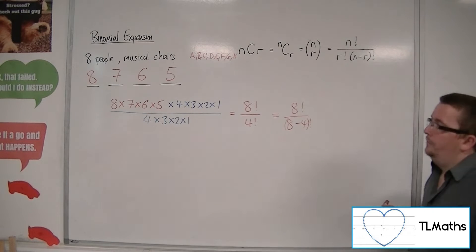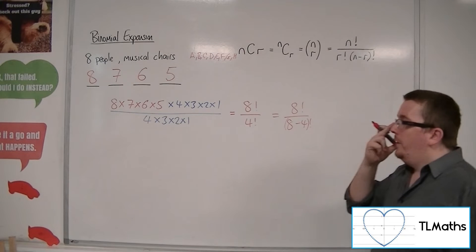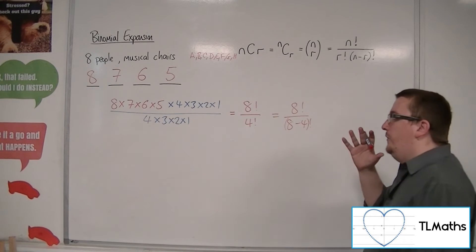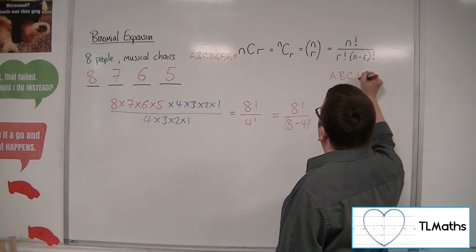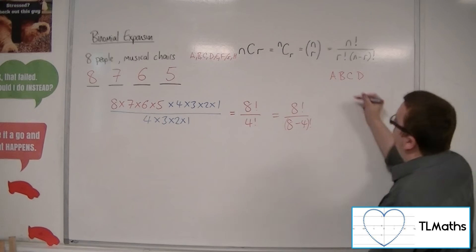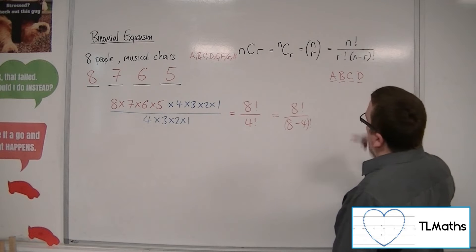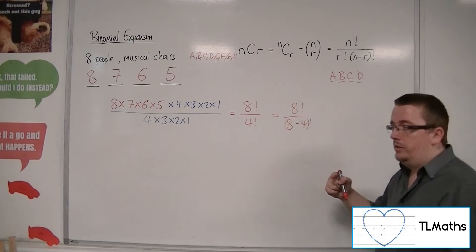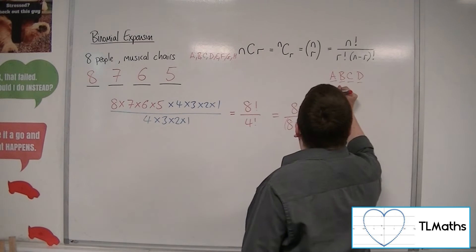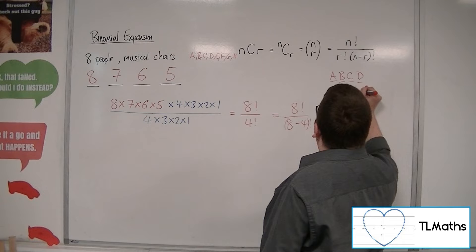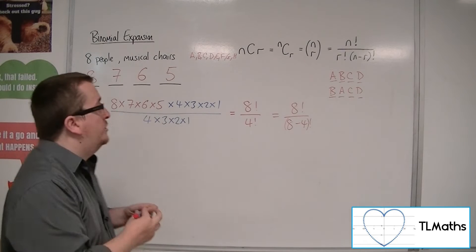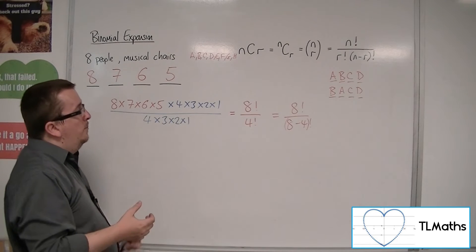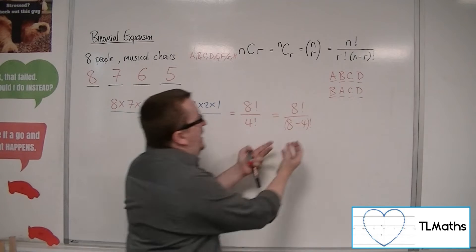so these eight people, then the way that I've done it here is that I would be saying that A, B, C, D, if that's how they were sat, would be different to B, A, C, D. Because that's a different thing. But it is included in here.